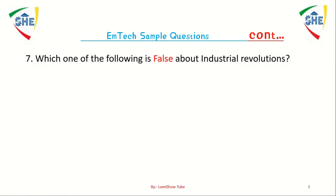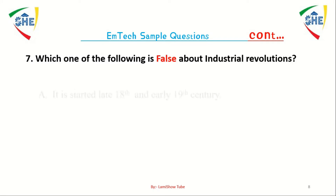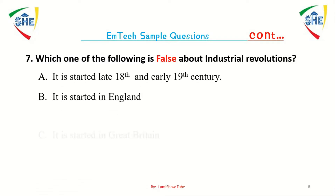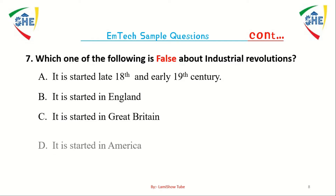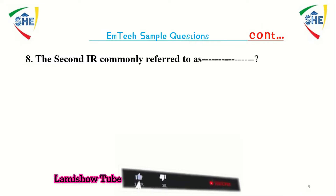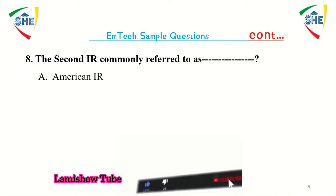Which one of the following is false about industrial revolutions? The second industrial revolution is commonly referred to as dash.